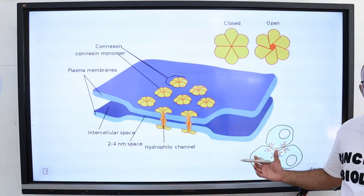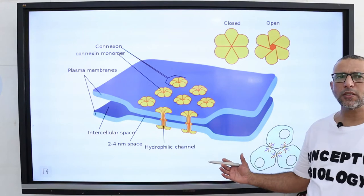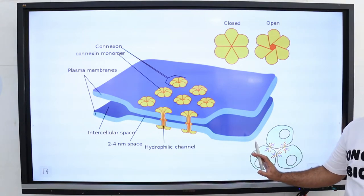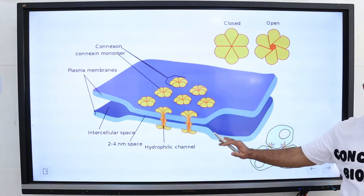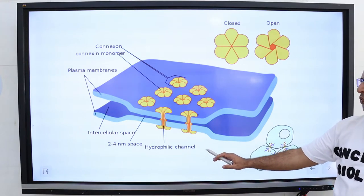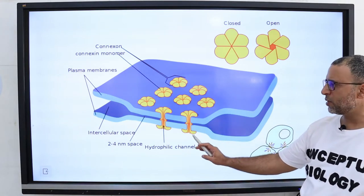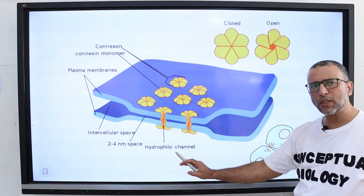Functionally, gap junctions in animal cells are like plasmodesmata in plant cells. They are channels between neighboring cells that allow for the transport of ions, water, and other substances.